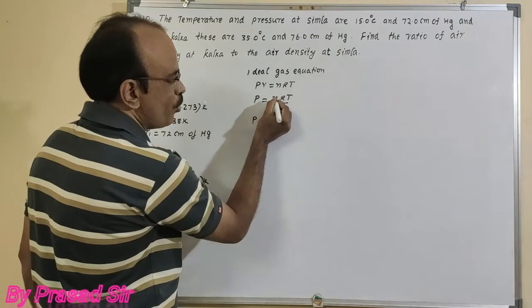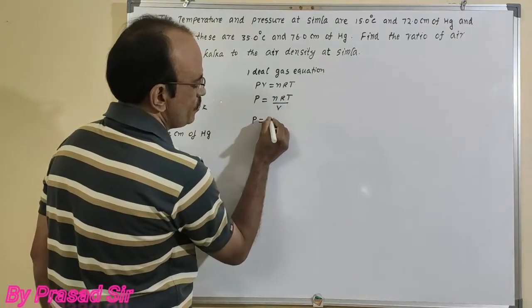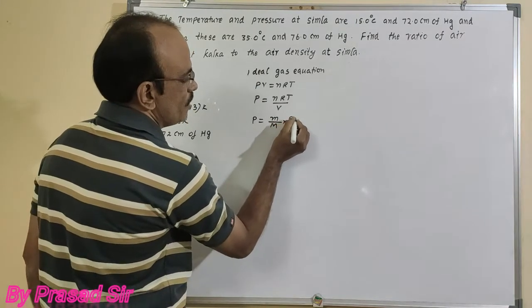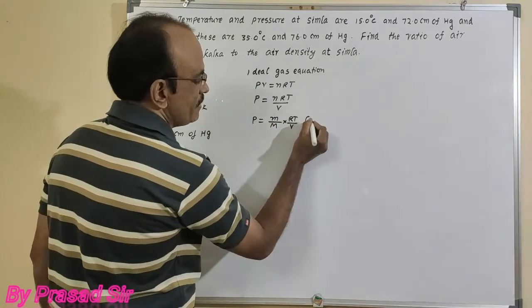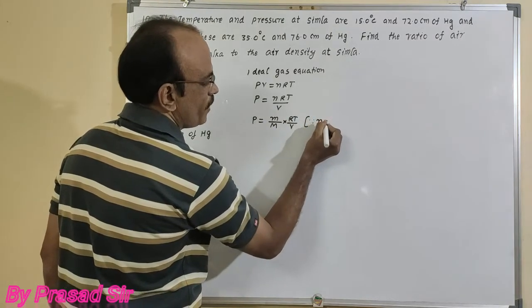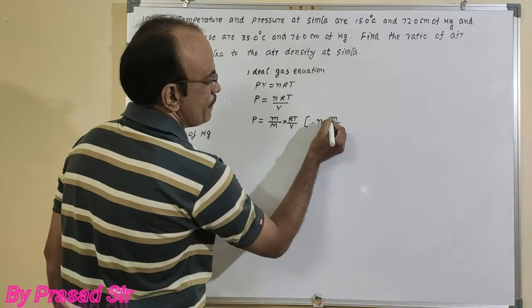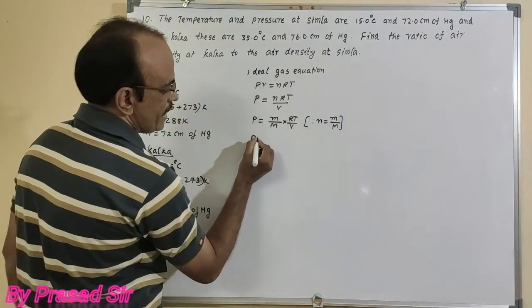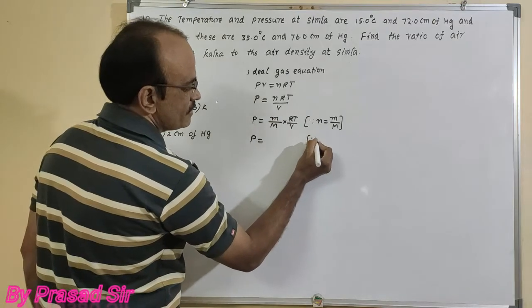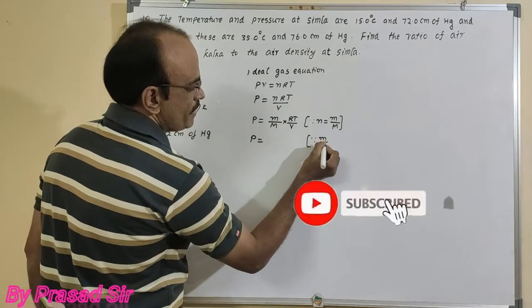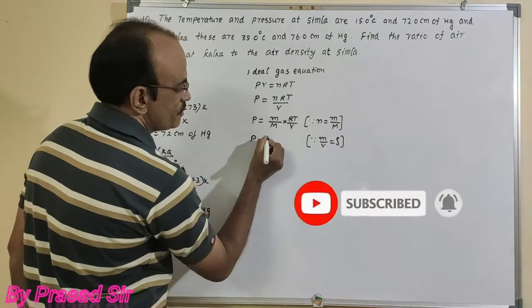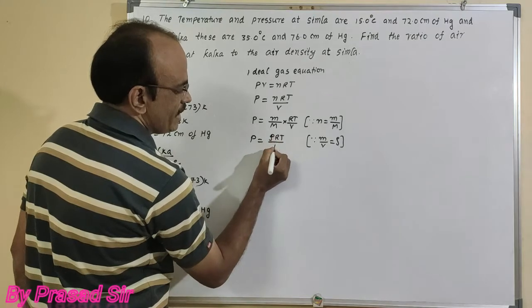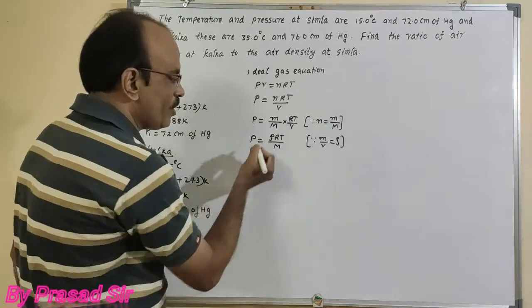We know that the number of moles equals mass of the gas divided by molecular weight. Substituting here, P equals mass over molecular weight times RT divided by volume. Since mass divided by volume equals density, P equals density times RT divided by capital M.